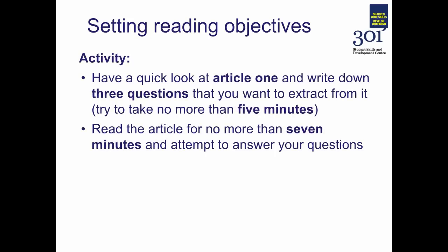To practice the reading objectives technique, we're going to have a quick look at your first piece of reading — again, it might be a book chapter, it might be a journal article, something like that. Write down three questions that you want to take away from it, taking no more than five minutes in the process of setting the questions. Once you've got your three questions, have a look at the article, read it for no more than seven minutes and attempt to answer your questions. So over to you.